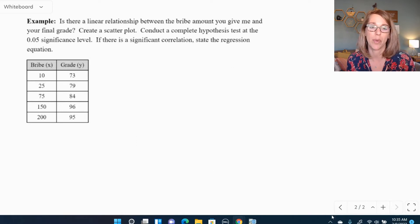In our example, we want to know, is there a linear relationship between bribe and grade? So the bribe is the amount that you're giving me. We're going to create a scatter plot. We're going to do this in Google Sheets, same way as you would do it in Excel, and then conduct a complete hypothesis test.